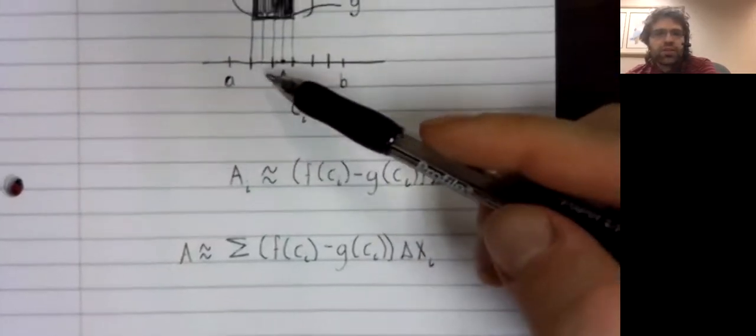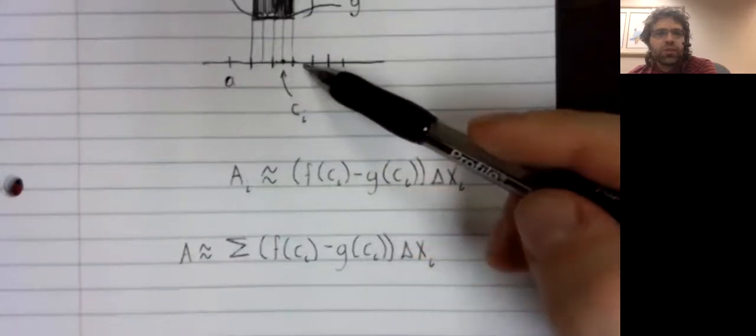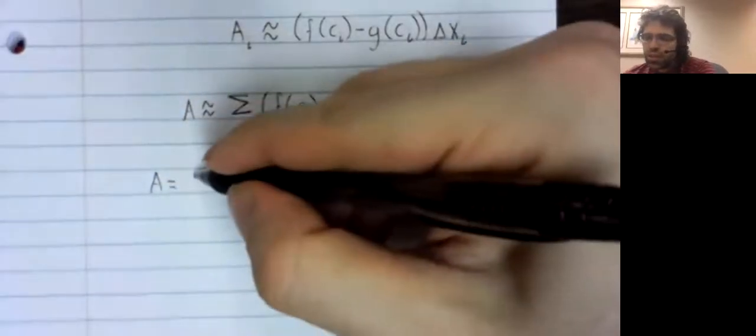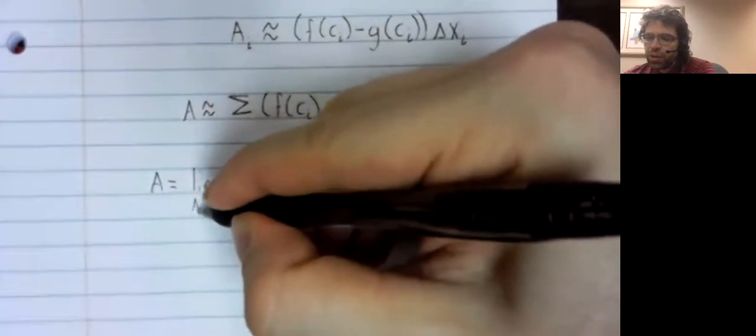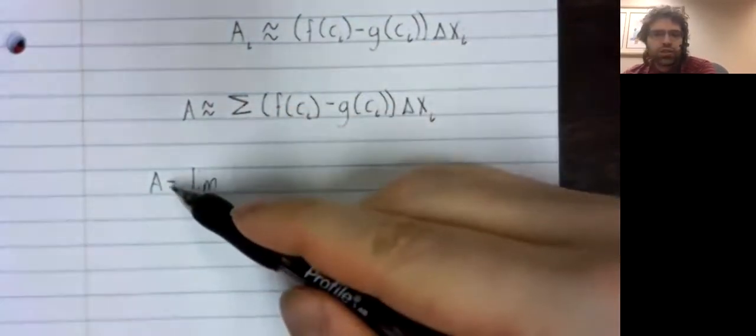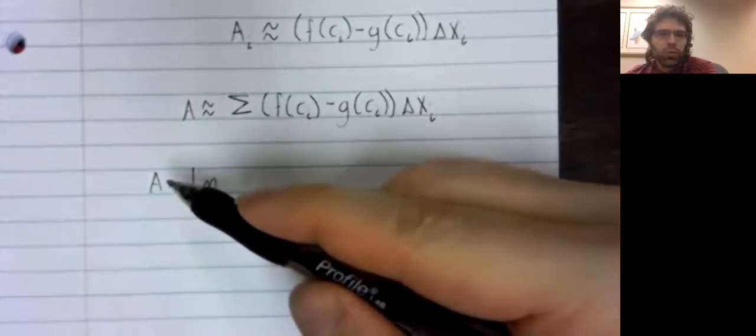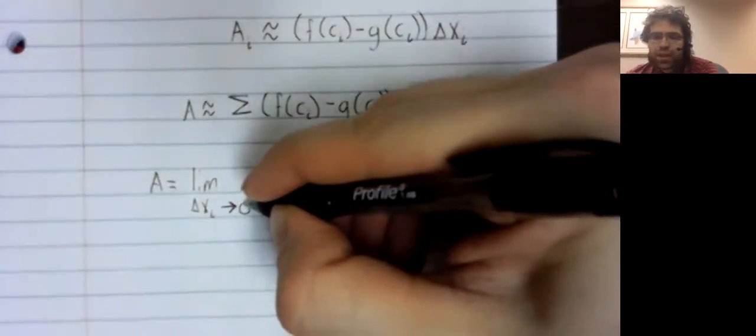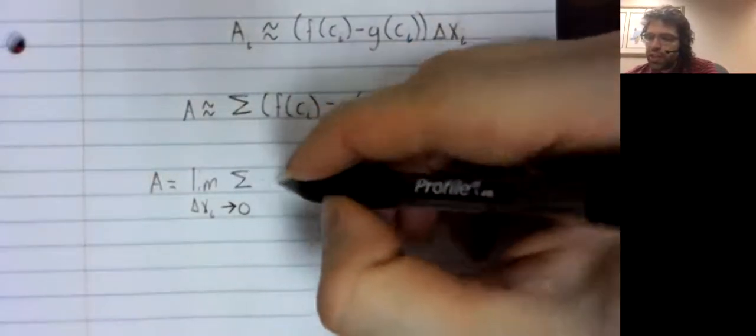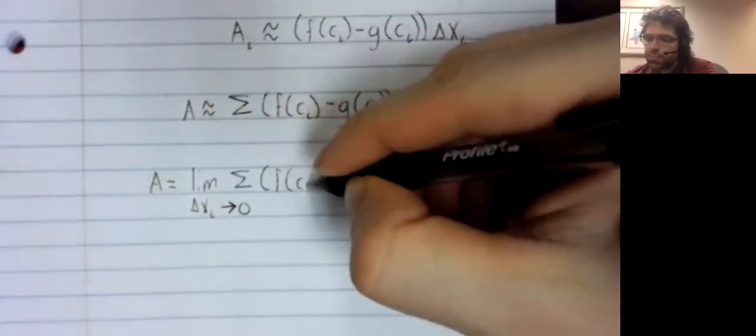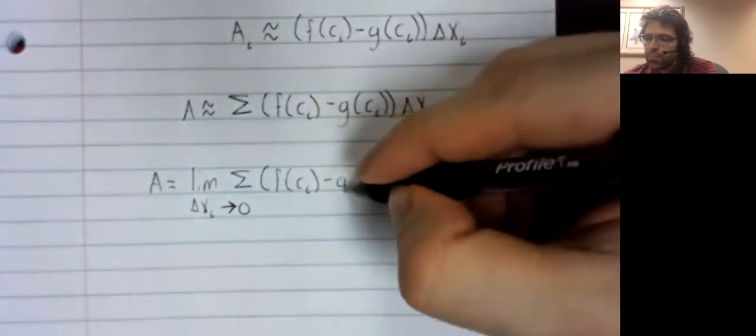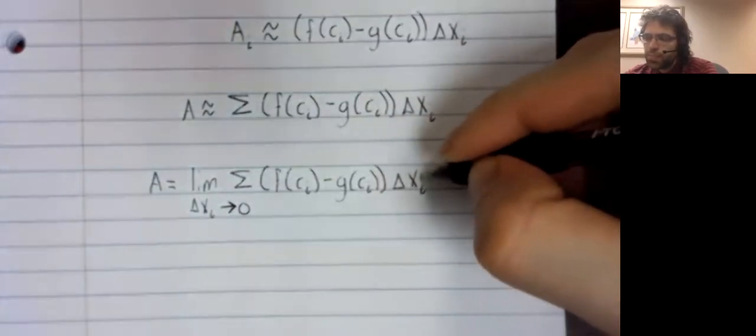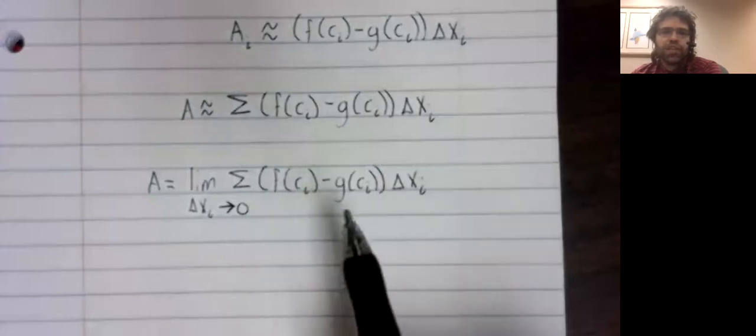These approximations get better and better as these intervals get smaller and smaller. So we'll say that the area between these curves, no longer an approximate but a real equal sign here. The area between the curves will be the limit as all of these intervals shrink to zero.